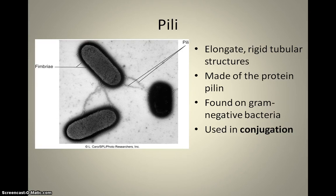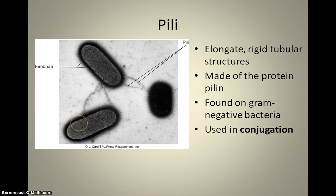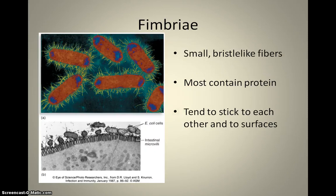Pili are used in a process called conjugation, which is a way for adjacent bacteria to exchange genetic information. DNA will go from one bacterium to another, allowing them to convey things like antibiotic resistance to one another. It's the closest thing we have to bacterial sex — they're unicellular and asexual, but they're exchanging genetic information. A pilus is how they do this, and conjugation is the process.